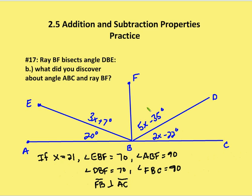Now the second part of this question asks: what did we discover about angle ABC and Ray BF? We know that angle ABE and DBC are equal to 20 degrees, and angle EBF is congruent to angle DBF, with x equal to 21. So 3x plus 7, or 3 times 21 plus 7, equals 70. And 5x minus 35 is also equal to 70. So FBD is 70 degrees and DBC is 70 degrees.